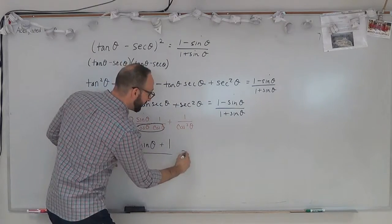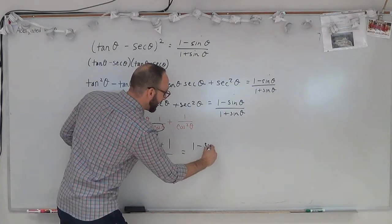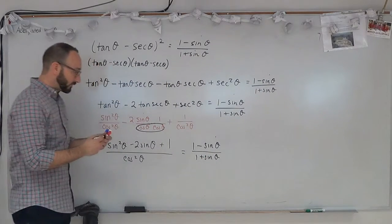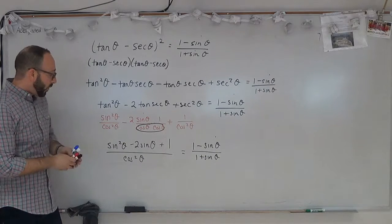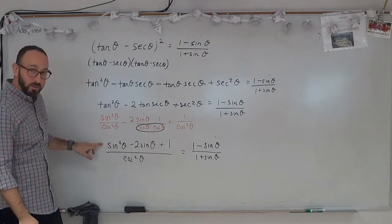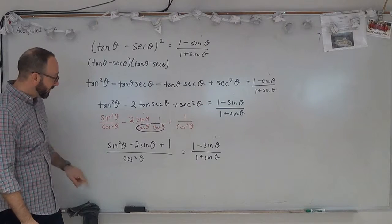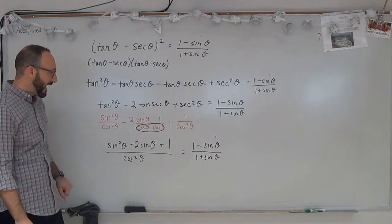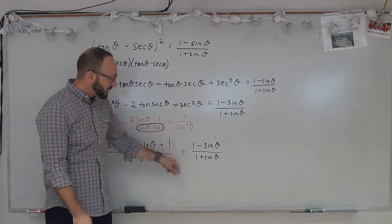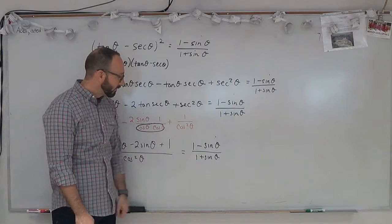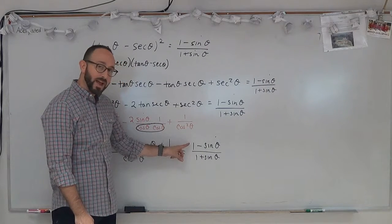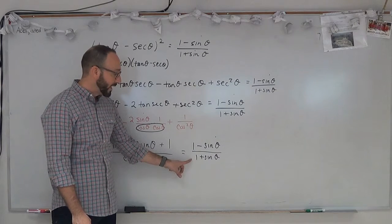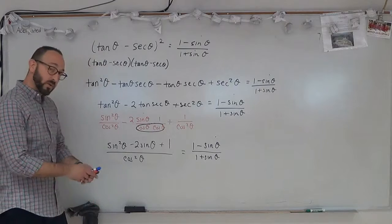This whole thing is supposed to equal 1 minus sine theta over 1 plus sine theta. The top is completely written in terms of sines, which is good, and the bottom is written in terms of cosines. We could do some factoring here, or we can go over to the right-hand side. Like in the last video, I'll try multiplying the numerator and denominator by the conjugate of the denominator.